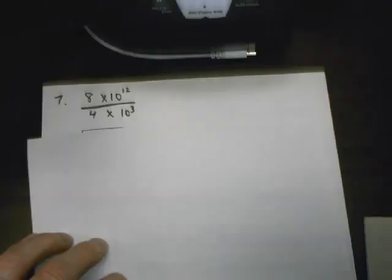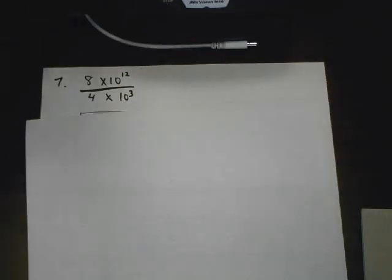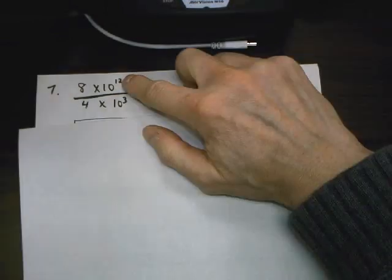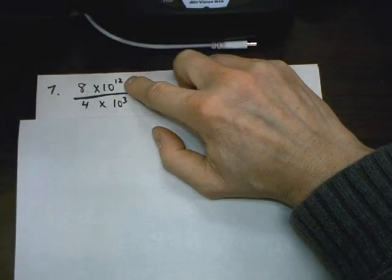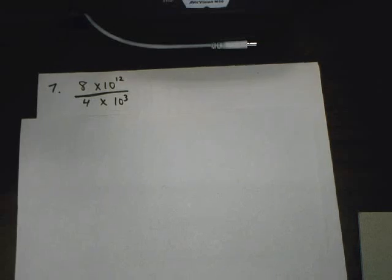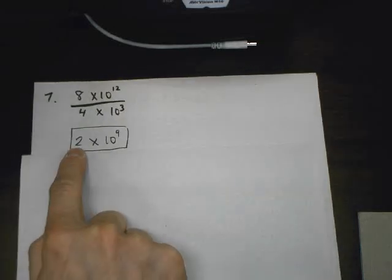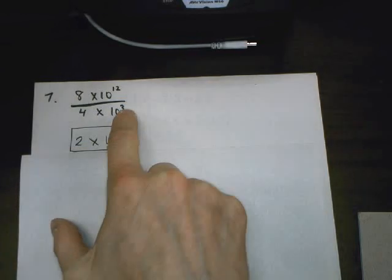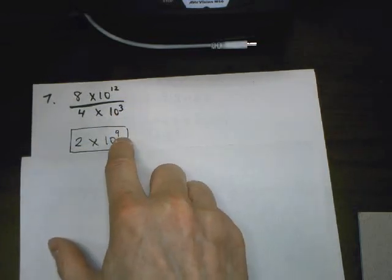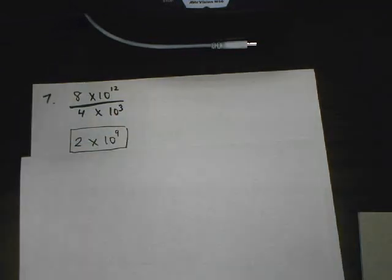Number 7: how many times larger is 8 times 10 to the 12th than 4 times 10 to the 3rd? Put the bigger number on top — you know it's bigger because of the exponent 12, not because of the 8. So 8 divided by 4 is 2, and 10 to the 12 minus 3 is 9. That's 2 times 10 to the 9th times bigger.